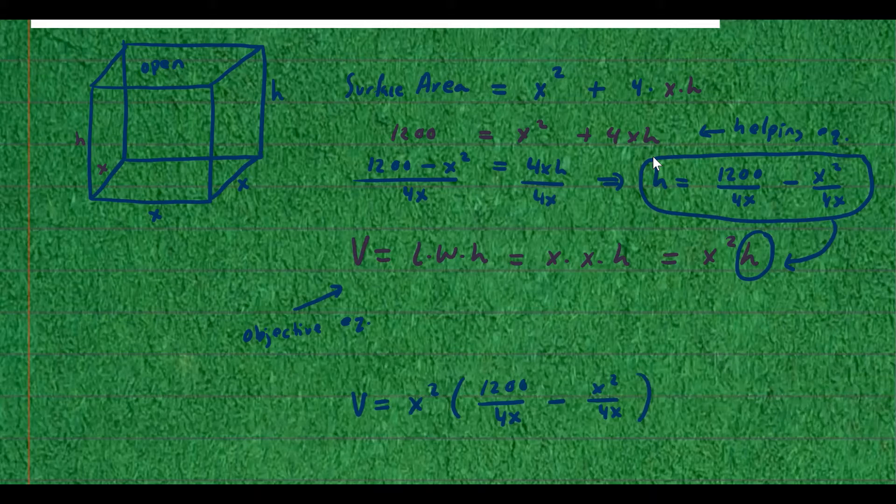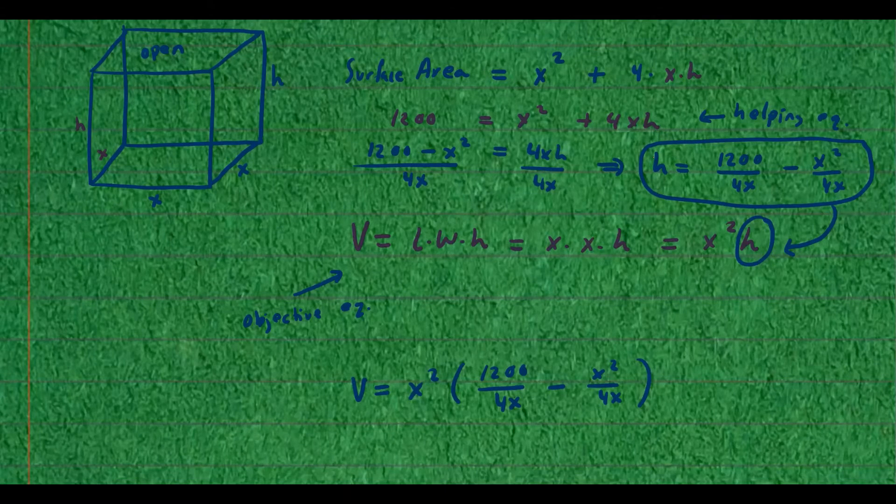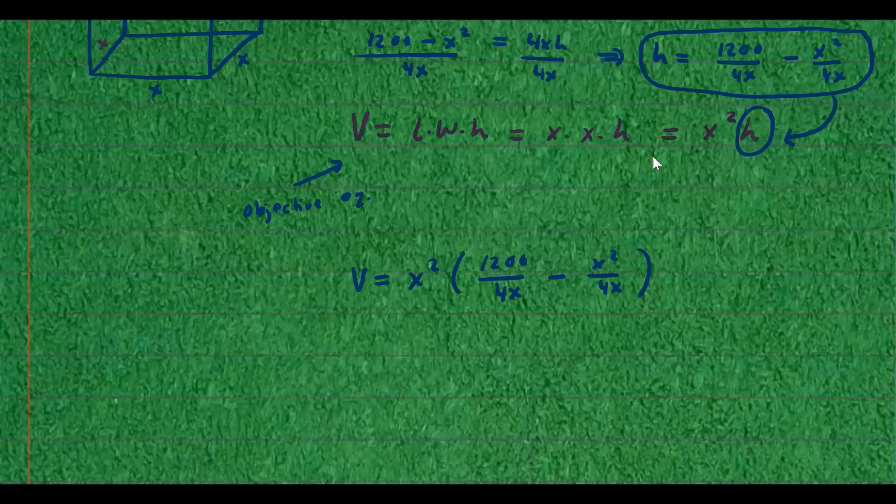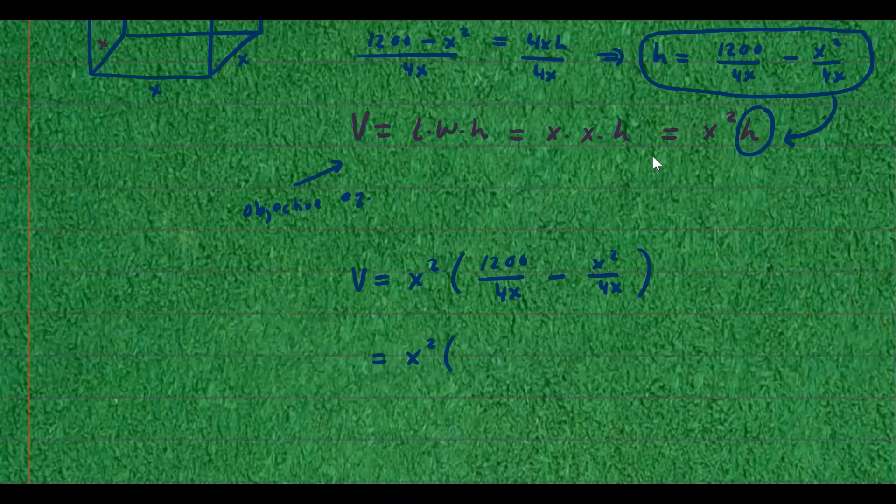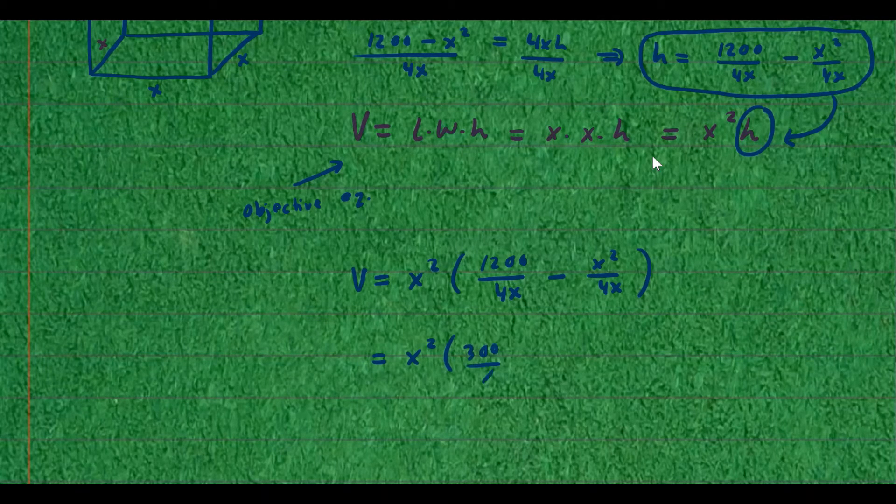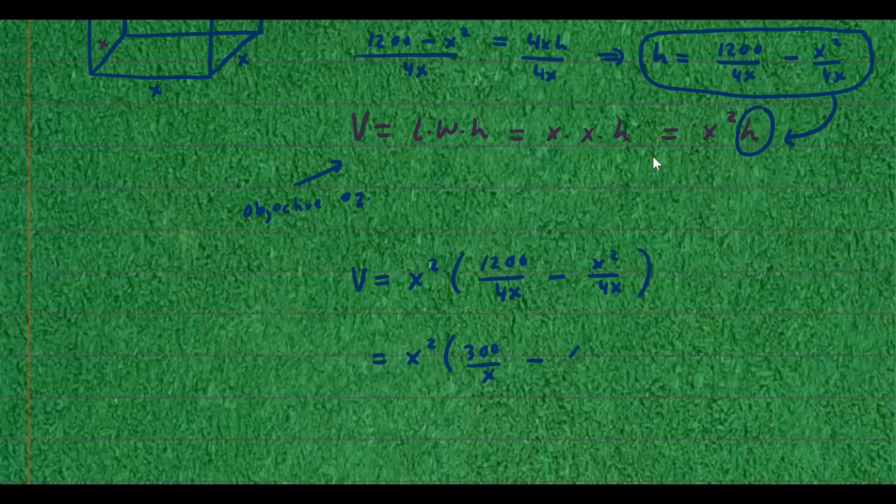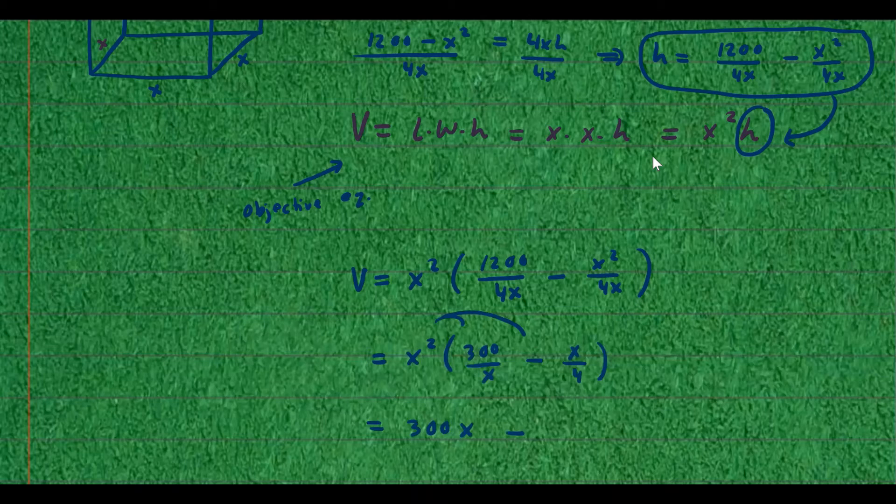And you want to simplify the numbers before differentiating. It's always easier to work with. So I'm going to go ahead and simplify 1,200 over 4. So I have x squared times, so 1,200 over 4 is 300 over x, and minus x squared over 4x is just x over 4. And now I can distribute this and then differentiate. So this is 300x minus x cubed over 4. And now I can take the derivative of this. So this is the volume function of x.